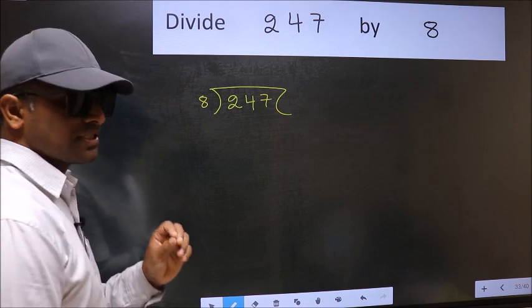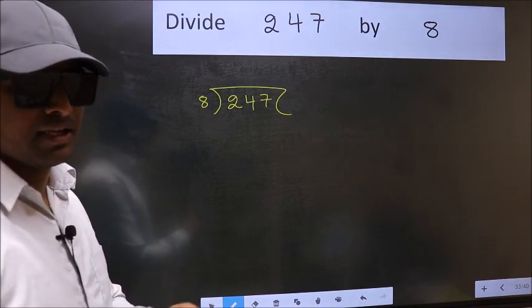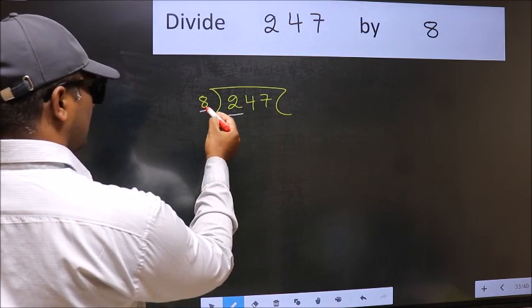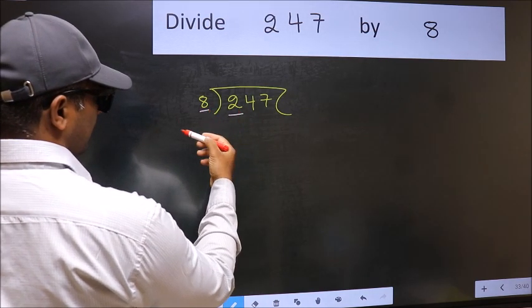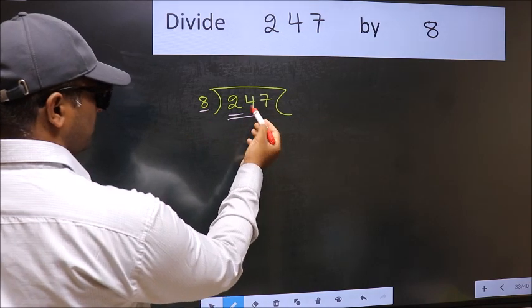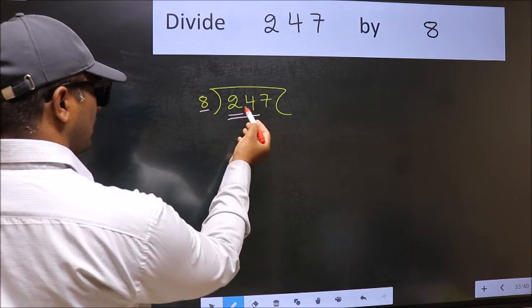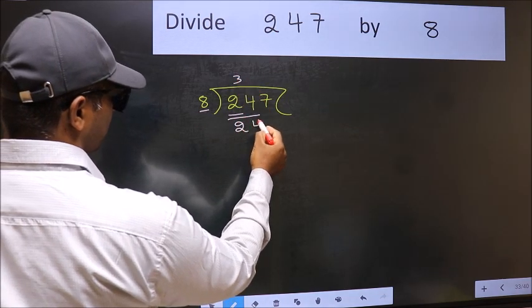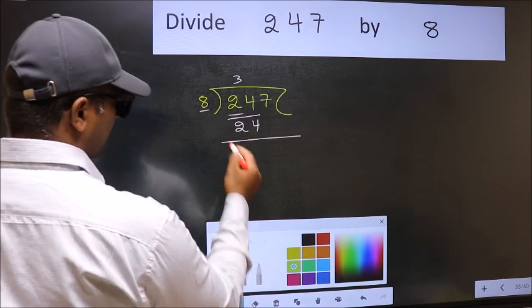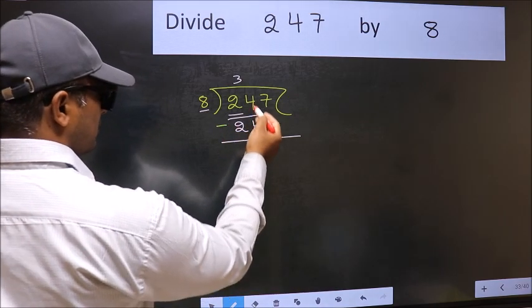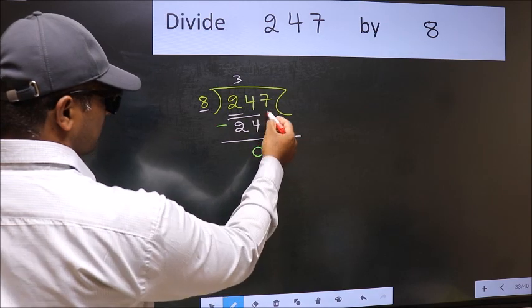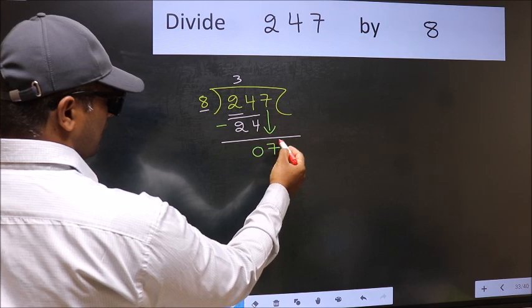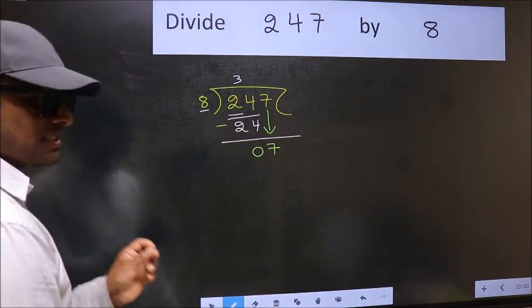This is your step 1. Next, here we have 2 and here 8. 2 is smaller than 8, so we should take two numbers: 24. When do we get 24 in 8 table? 8 threes 24. Now you should subtract 24 minus 24 equals zero. After this, bring down the beside number, so 7 down.